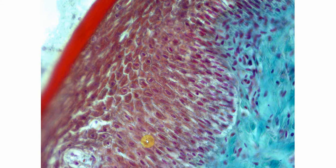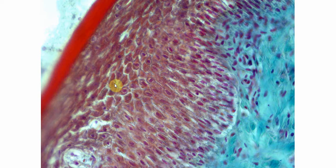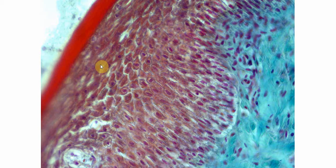The next layer is the granular cell layer because keratohyaline granules are present in these cells. We call this the granular layer. In this slide, the granules are not very clearly visible. The granular cell layer cells are flattened in shape — you can see they have a fusiform shape. It is also several layers thick.